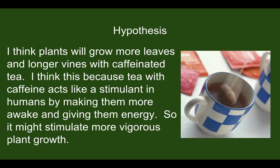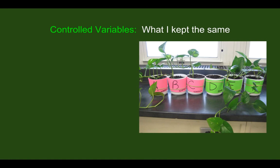I think this because tea with caffeine acts like a stimulant in humans by making them more awake and giving them energy, so it might stimulate more vigorous plant growth. Next, show your variables — the control variables are what I kept the same.